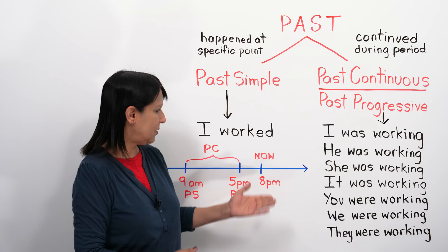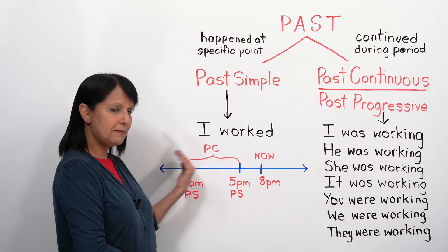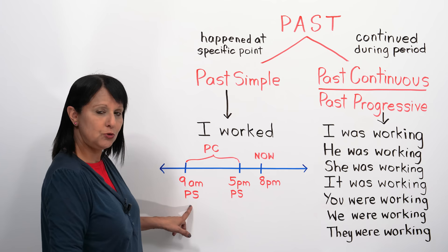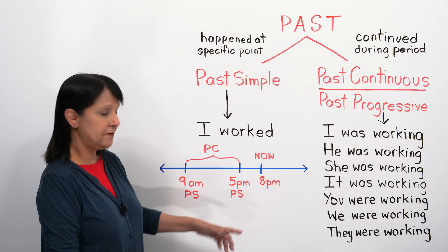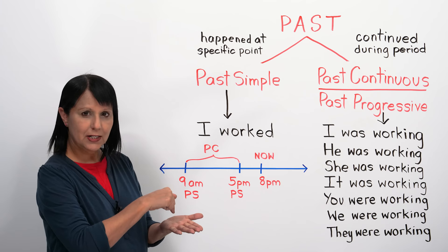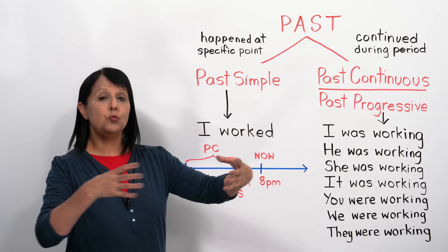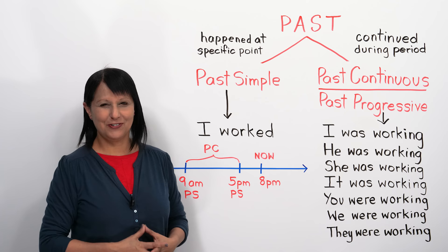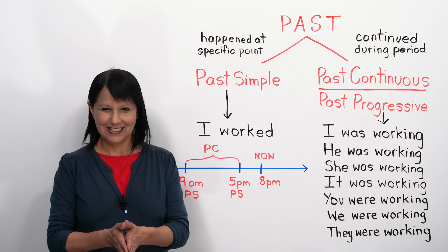Let's say this is our timeline — this is now, and it's 8pm. In the past, before this, you were working. You started work at 9am and finished at 5pm — both past simple, because 9am and 5pm are specific points in time. But if you want to talk about the period from 9am to 5pm and emphasize that it went on for some time, you would say 'I was working from 9am to 5pm.' That is the past continuous.